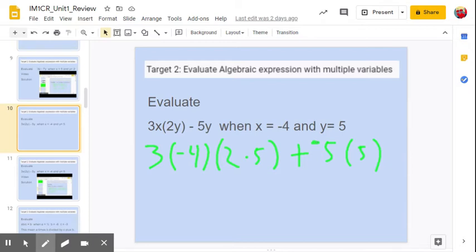3 times negative 4 is negative 12, and multiply that by 2 times 5, which is going to be 10, plus negative 5 times 5 is negative 25.